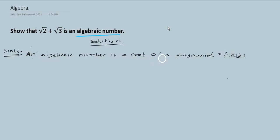An algebraic number is a root of a polynomial of z of x, that is the polynomial or the ring z of x, the polynomial ring z of x vs z is an integer.